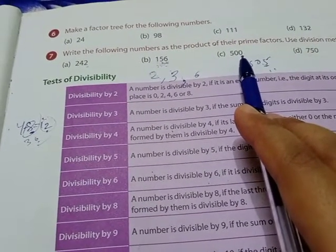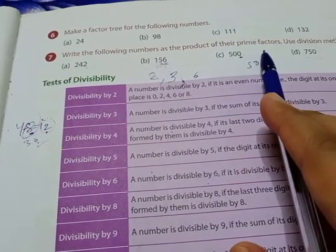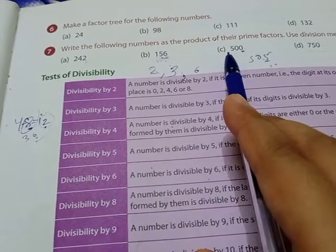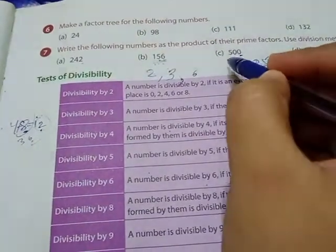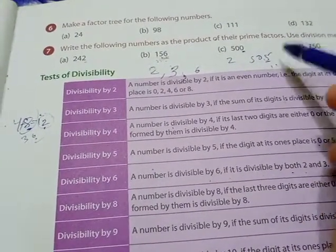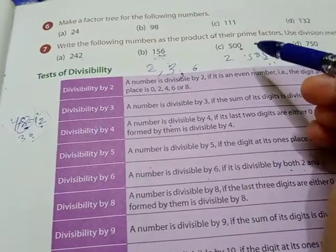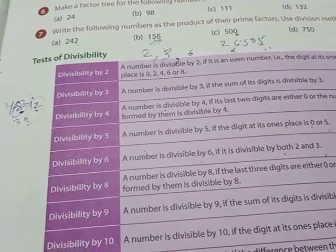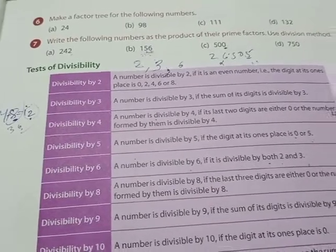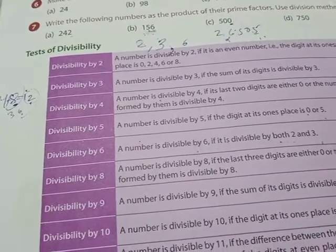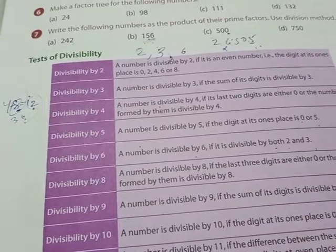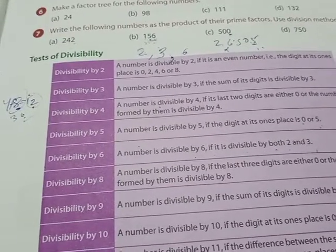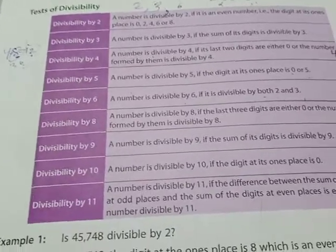Take 500 as a counter-example. It has an even number in its ones place, so 2 is its factor. But when you add its digits: 5 + 0 + 0 = 5, and 5 is not in the table of 3, so 3 is not its factor. Since it has only 2 and not 3, we cannot say 6 is its factor. Both 2 and 3 must be factors for 6 to be a factor.